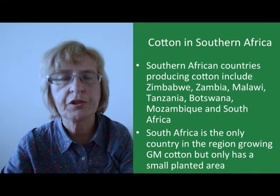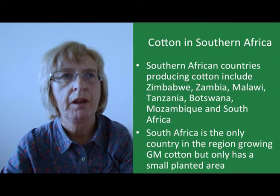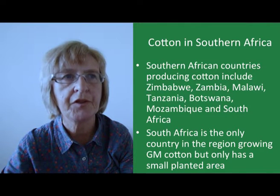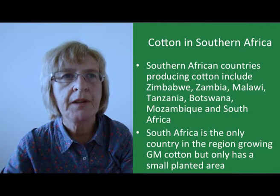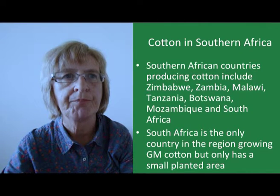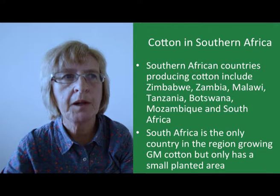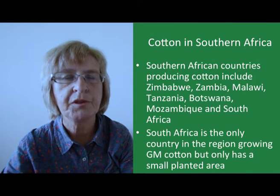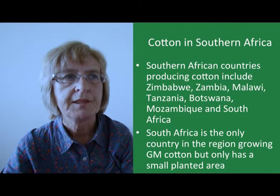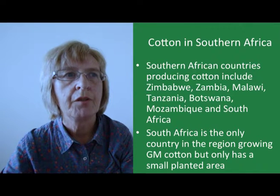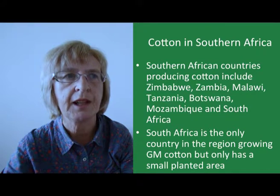How important is cotton in southern Africa? The biggest producers in the world are China, India, Brazil and the United States, but quite a number of countries in the southern African region do grow some cotton, including Zimbabwe, Zambia, Malawi, Tanzania, Botswana, Mozambique and South Africa. South Africa is the only country in the region growing GM cotton, though the cotton crop represents a small area of planting — around 8,000 hectares.